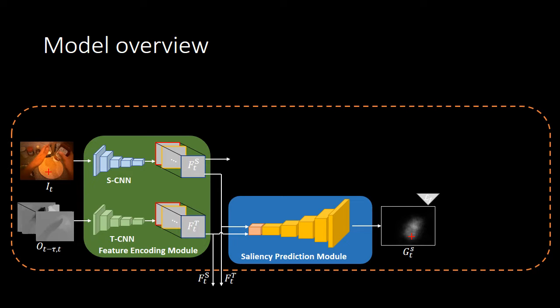Given an RGB image and stacked optical flow images of the current frame, we first use a feature encoder to get the latent representations of appearance and motion respectively. The saliency prediction module, simplified as SP, takes as input the latent representations and outputs a saliency-based gaze map.